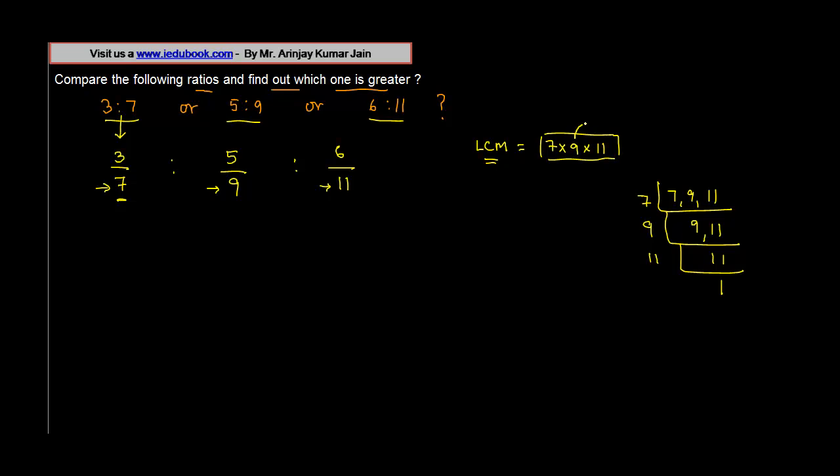If you see, 9 into 11 is 99, and 99 into 7 is 693. So you make the denominator as 693 for each of these three. Once you have done this, then you need to see what have you multiplied the denominator or the consequent with.